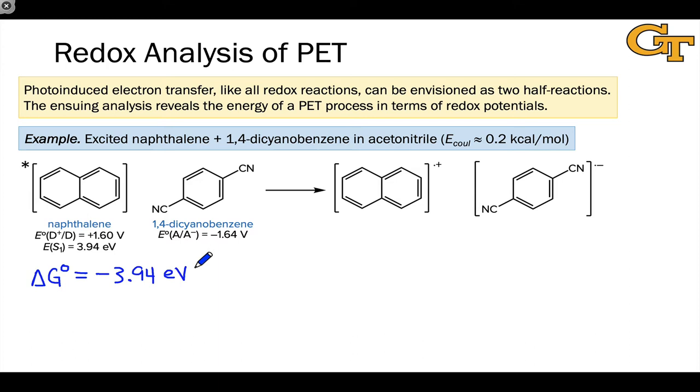So we're going to add, and I'm going to try to be as systematic as I can with the signs, the charge involved, which is negative elementary charge, times the reduction potential of 1,4-dicyanobenzene, which is negative 1.64 volts.